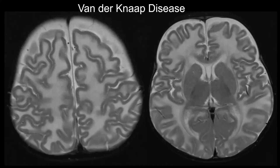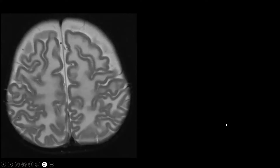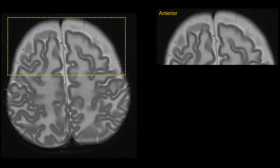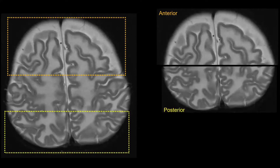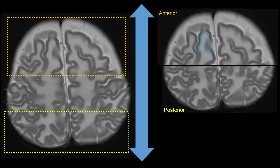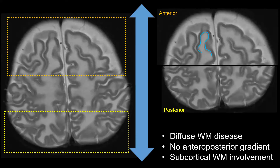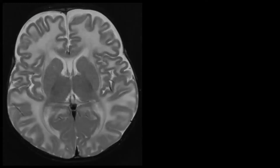This is a patient with van der Knaap disease — clearly the brain of a very young patient, with MRI performed during the first year of life. We see myelination of the posterior limb of the internal capsule and a bit of the corpus callosum at the level of the genu, but the supratentorial white matter signal is diffusely abnormal. Looking in more detail: the anterior brain is equally involved as the posterior brain, so there is no gradient. We have involvement of the subcortical U-fibers. To summarize: diffuse white matter abnormalities without a gradient and with subcortical white matter involvement.